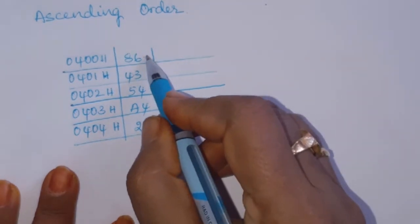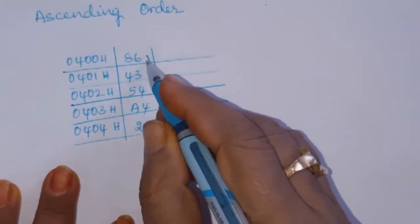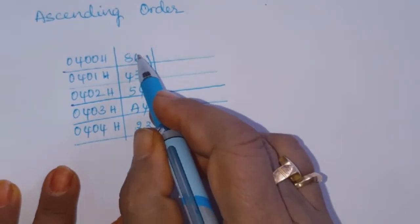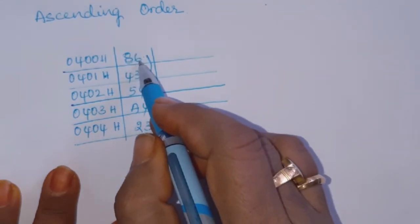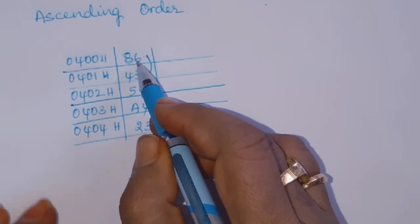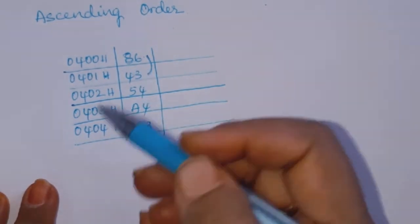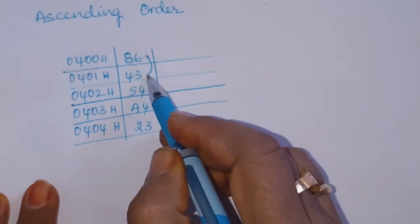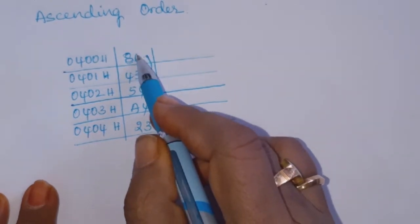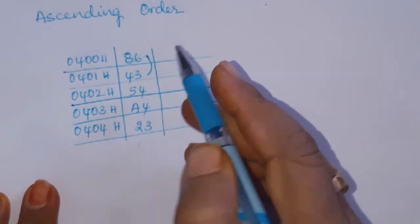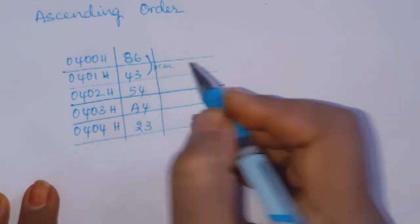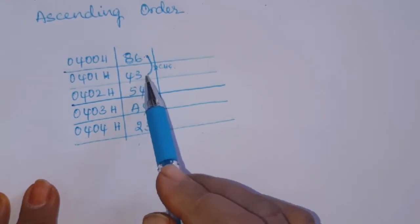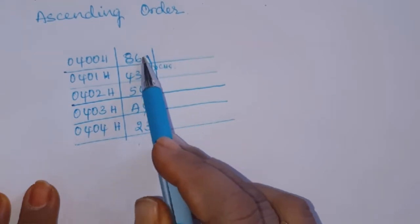To arrange them in ascending order, first we need to compare the bytes one by one. The number in the first location is compared with the number in its next location. Because this is ascending order, the largest number should come at the last and the smallest number should come to the first position. If the first number is greater than the second, then this is to be exchanged.